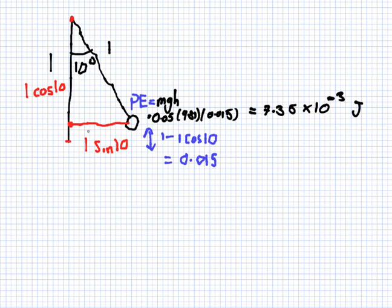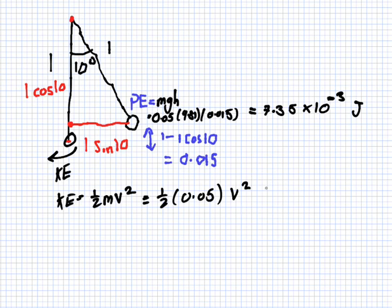Okay, now when the ball is down here moving, it has kinetic energy. Kinetic energy is a half mv squared, which is a half 0.05v squared. We don't know what the v is. That's what we want. But we do know that the energy at the top must equal the energy at the bottom.